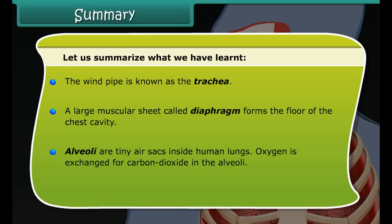Aerobic respiration takes place in the presence of oxygen. The windpipe is known as the trachea. A large muscular sheet called the diaphragm forms the floor of the chest cavity. Alveoli are tiny air sacs inside human lungs where oxygen is exchanged for carbon dioxide.